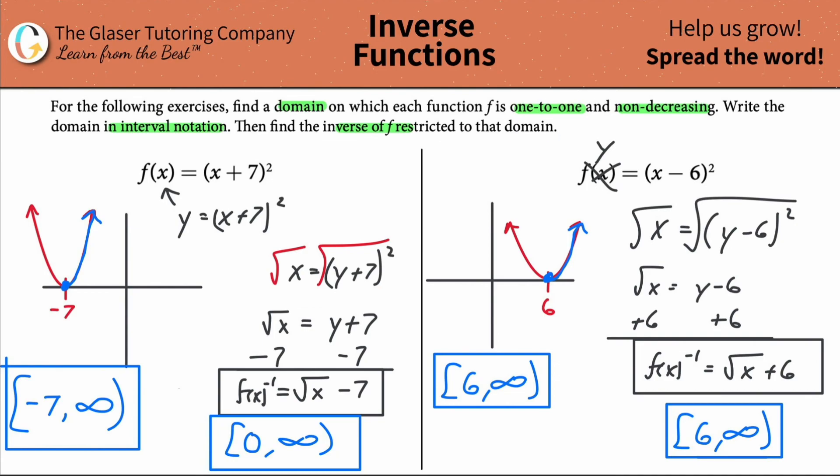We are restricted now to [6, ∞) for that domain. Whereas in this particular case, we were restricted to [-7, ∞), but we realized we cannot plug in a negative 7 in here because it would be undefined, nor could we plug in a negative 6 or negative 5, et cetera. So hopefully that makes sense.